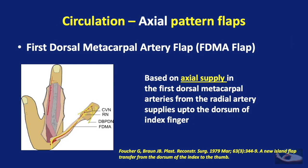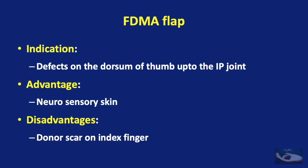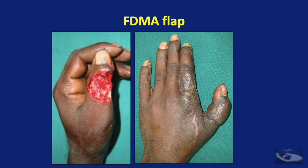As opposed to random pattern flaps, the axial pattern flaps are based on axial supply, like the first dorsal metacarpal artery (FDMA) flap, which is based on the first dorsal metacarpal artery arising from the radial artery and supplying the dorsum of the index finger. These flaps are classically indicated for resurfacing defects on the dorsum of the thumb up to the IP joint. The advantage is that this is a sensate flap, though there is a resultant scar on the proximal phalangeal region of the index finger.